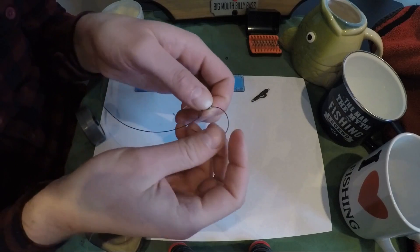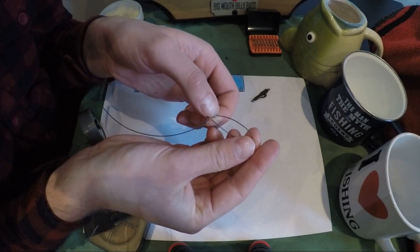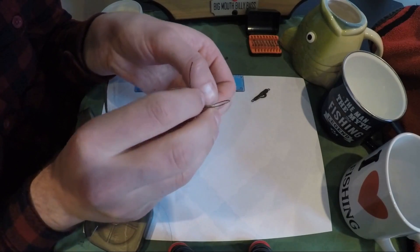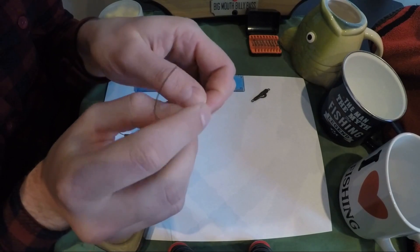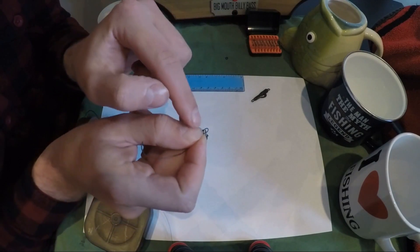So we have a figure of eight knot and the little hook section hanging off there. Now what we do is form our loop and pass the tag end back through the figure of eight, following the path that it took.